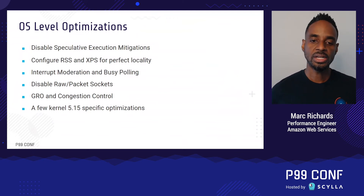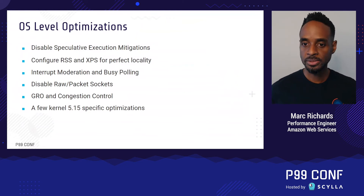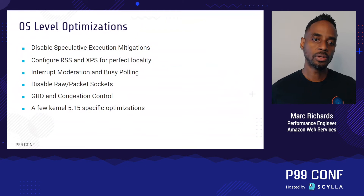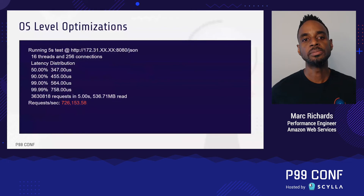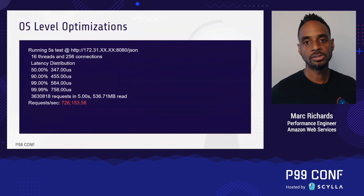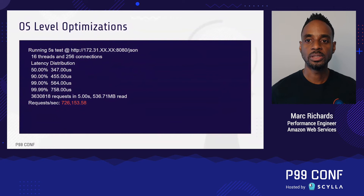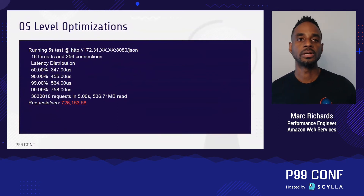The last few optimizations are much smaller: disabling raw sockets used by other programs, tweaking GRO and congestion control settings, and a few kernel-specific parameters. Our OS optimizations take throughput from 358,000 requests per second to a whopping 726,000 requests per second — a solid 103% performance improvement. We're still far behind DPDK, but we're off to a pretty good start.